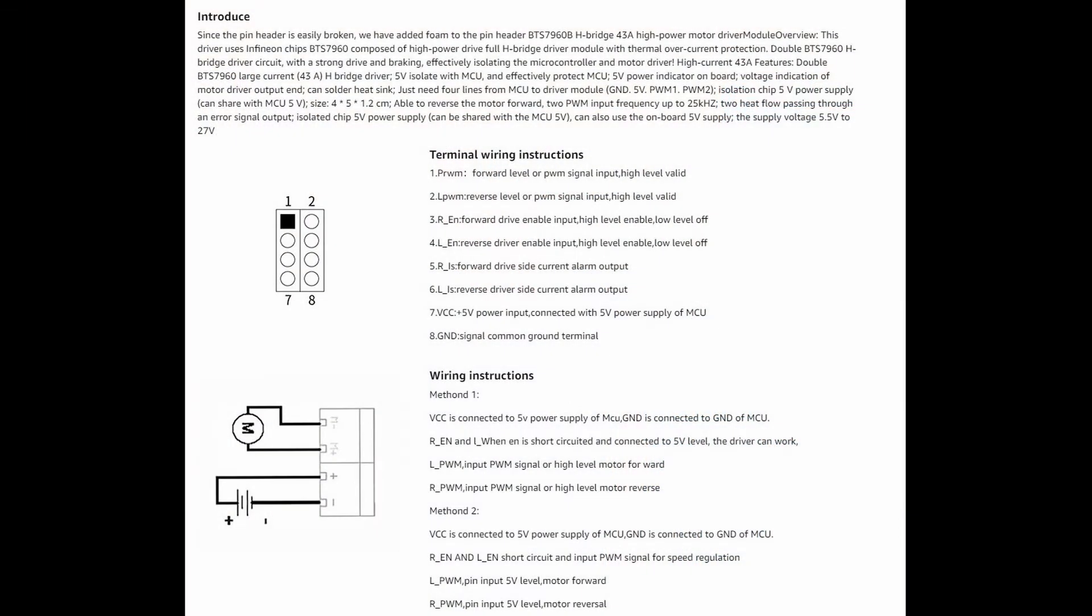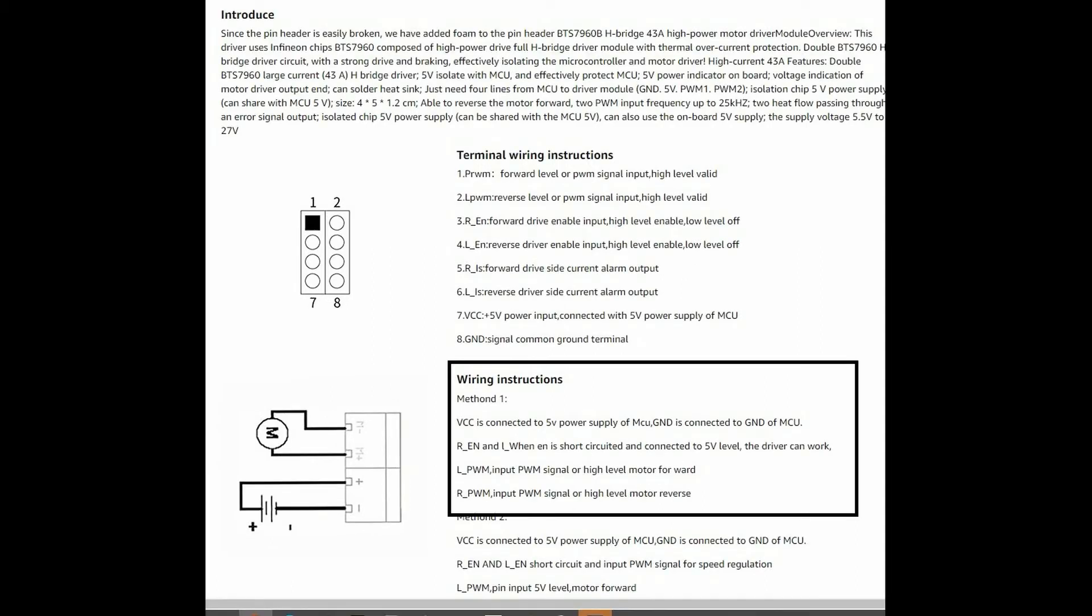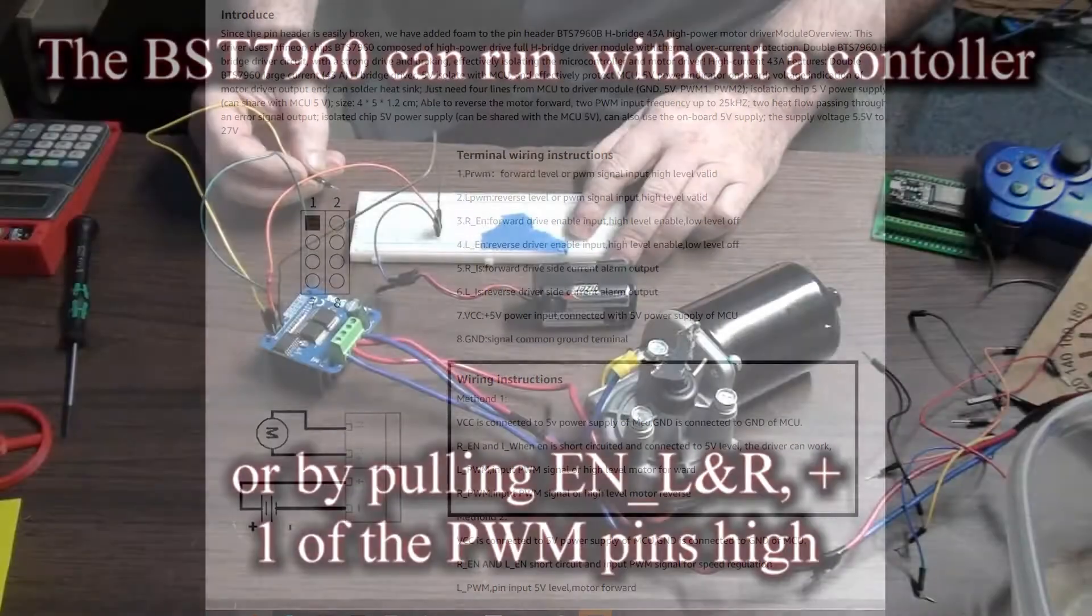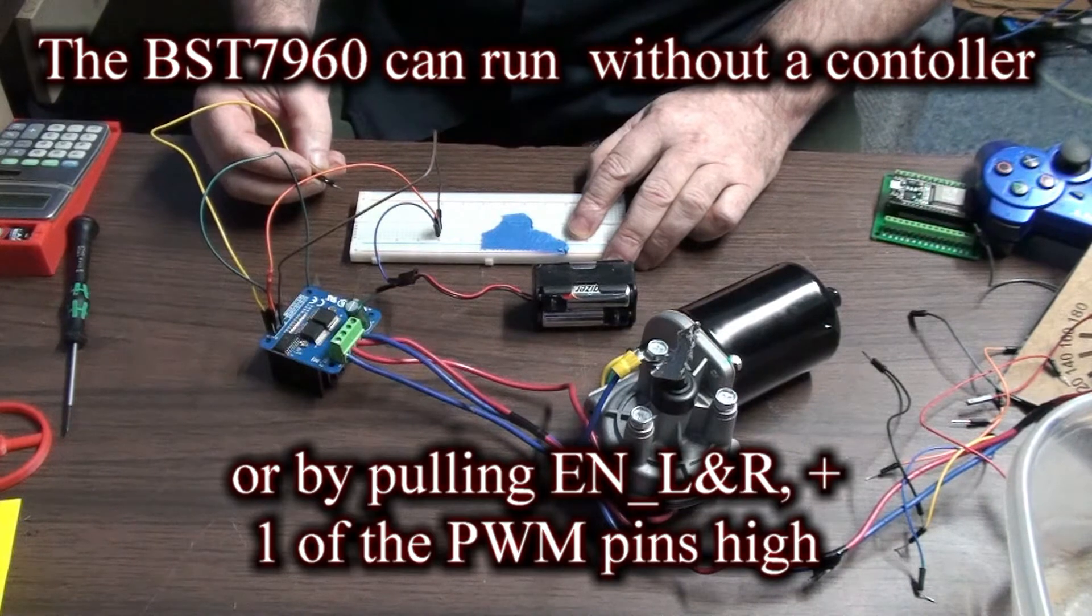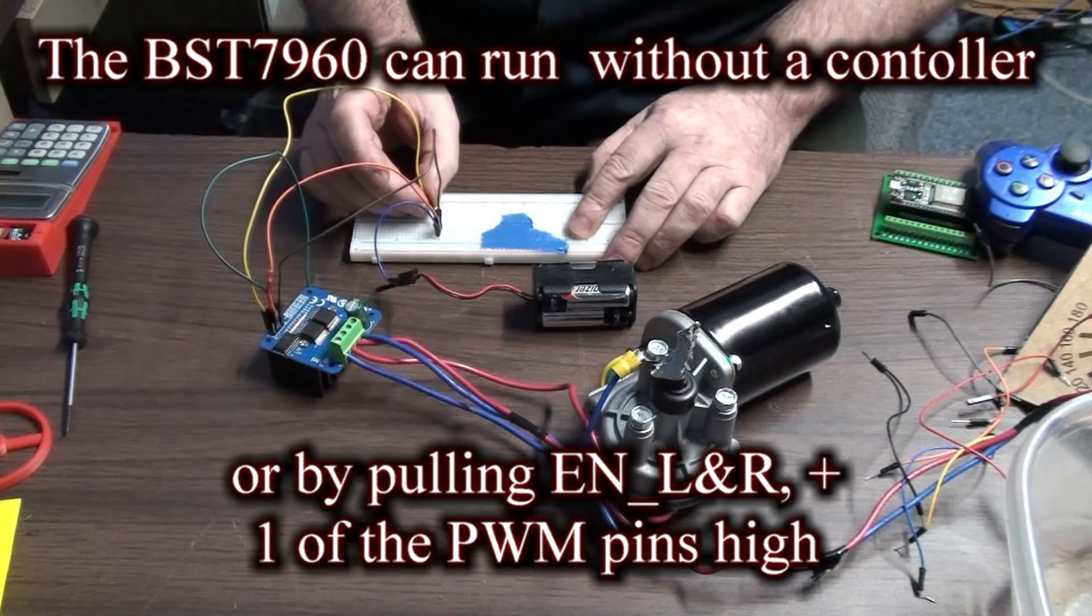This is the wiring directions that came with the BST7960. Pause the screen if you need to. I use method one. You send five volts to the enable pins and to one of the PWM pins you can make it go.